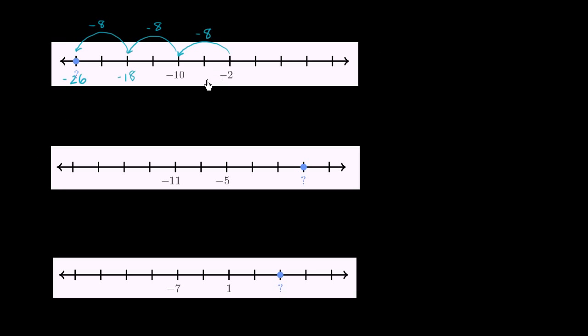Now, another way we could have thought about it is, if we jump 2 to the left and that's negative 8, then one jump to the left is going to be negative 4. So you could say, well, this is negative 4. That would get you to negative 6. Then negative 4 again gets you to negative 10. Then this would be negative 14, negative 18, negative 22, negative 26.